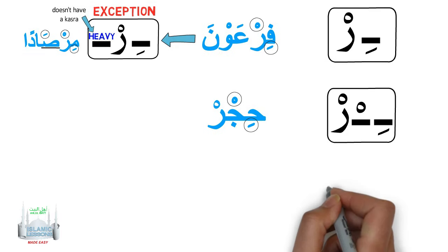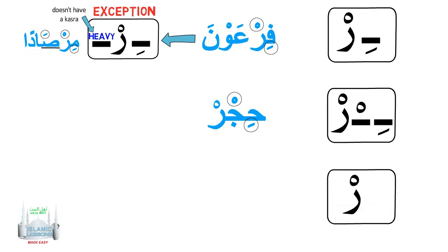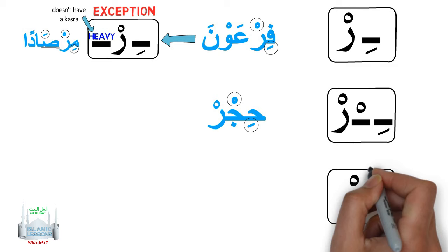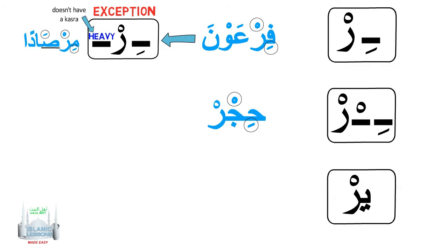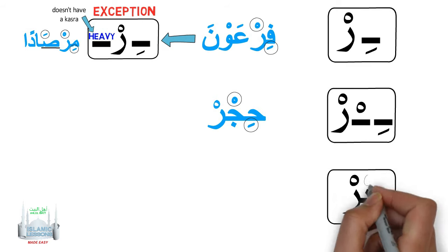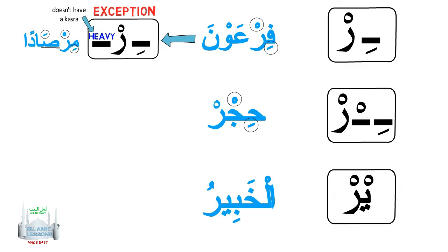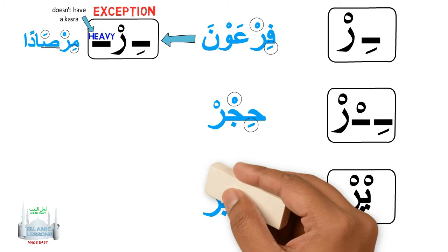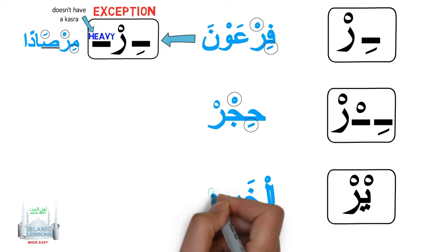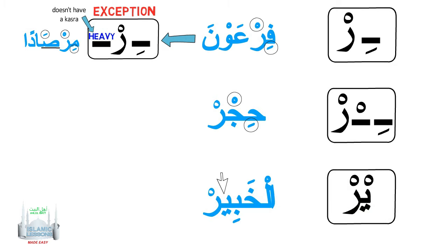If the Ra carries a sukoon as a result of stopping, and before it there is a Ya sakin, it is pronounced light. The Ra becomes sakin as a result of stopping. It has a Ya sakin before the Ra. It reads as Al-Khabir with a light Ra. And here it reads Khayr with a light Ra.